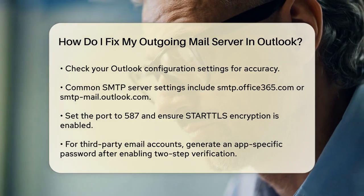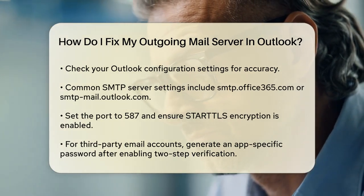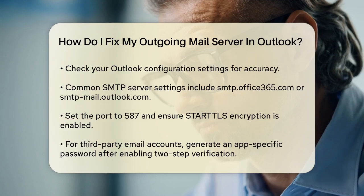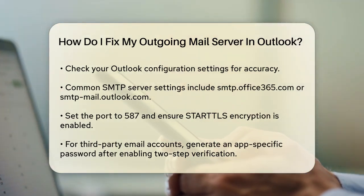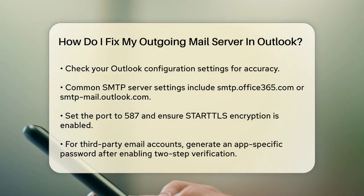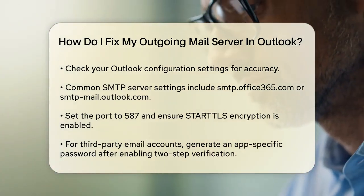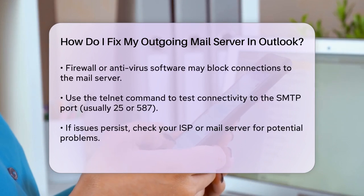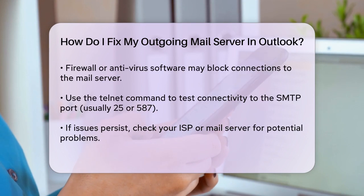Use this password in your Outlook settings instead of your regular account password. Another potential issue could be with your firewall or antivirus software. Sometimes these programs block connections to certain IP ranges, including your mail server. You can check this by using the Telnet command to see if you can connect to the SMTP port, usually port 25 or 587, on your mail server.